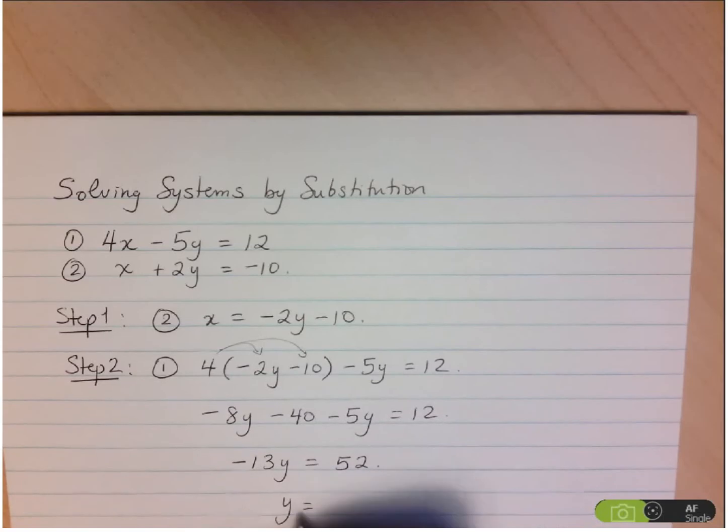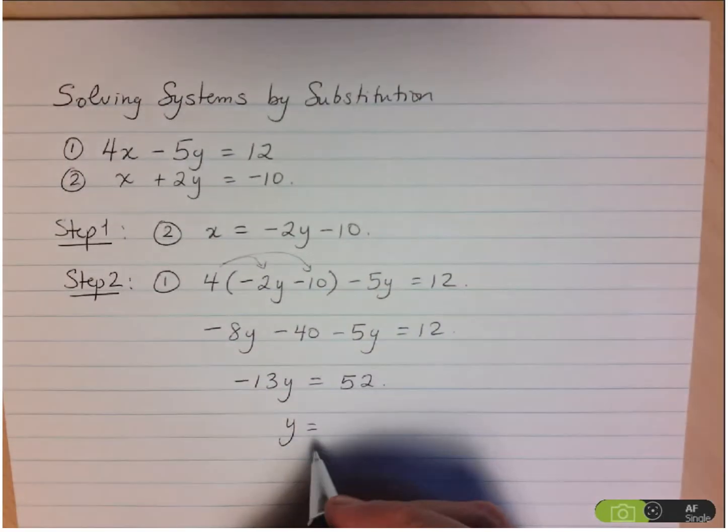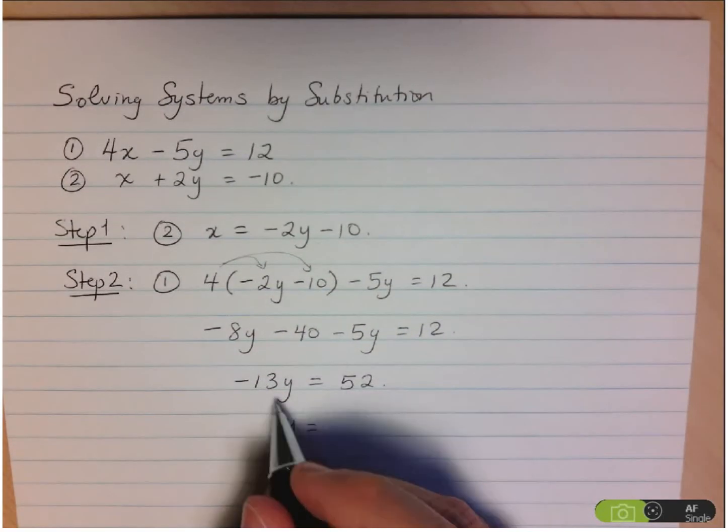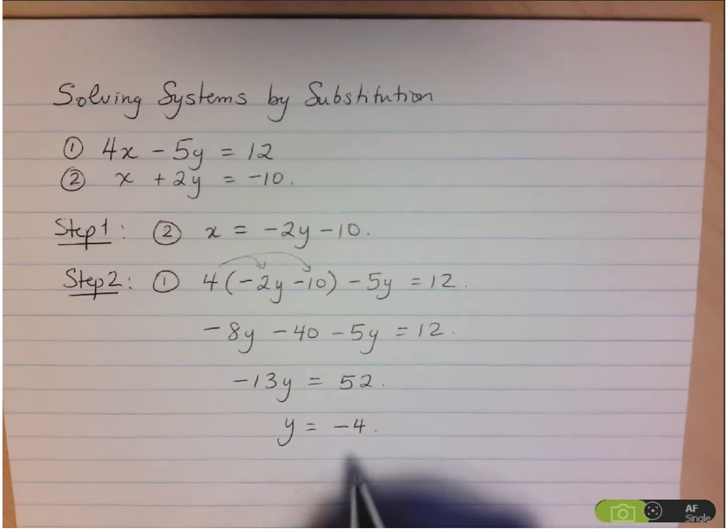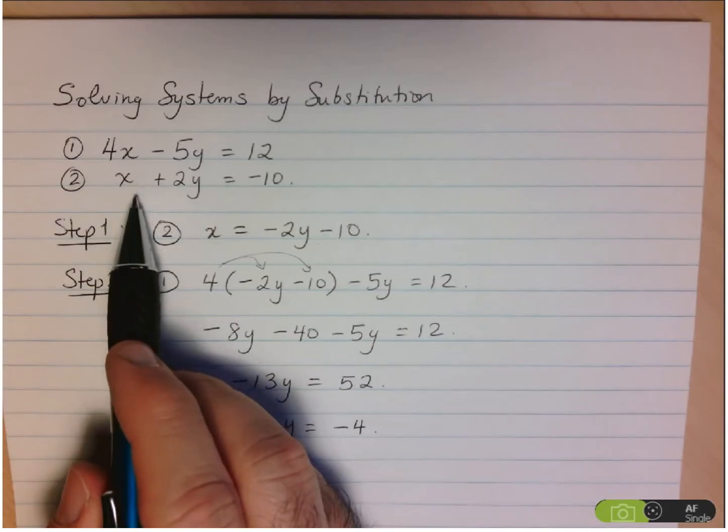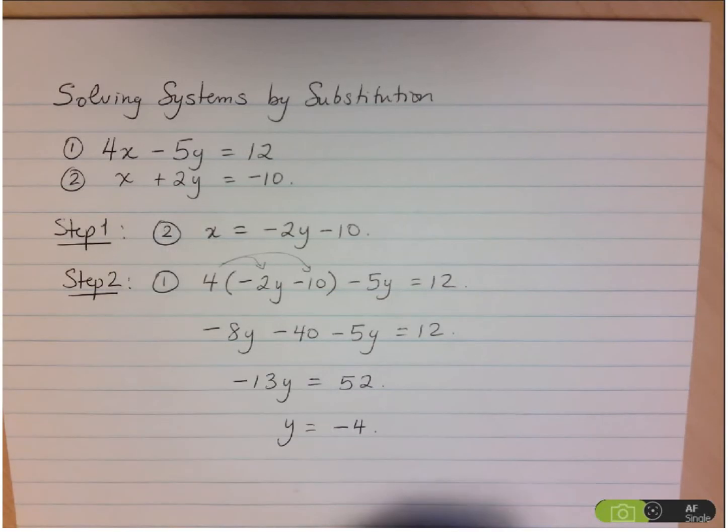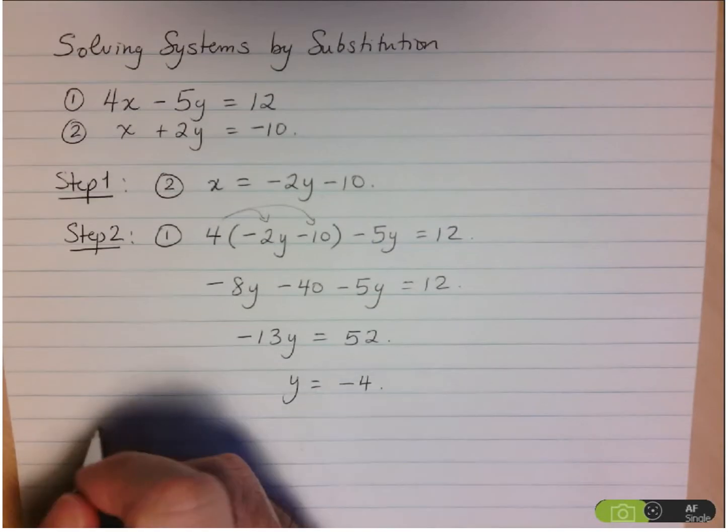And then to solve for y, we just divide 52 by negative 13, and that's negative 4. So now we've found the y value that will help to solve this system of equations. But there are two variables. So we also need to find the x, and that's where step 3 comes into play.